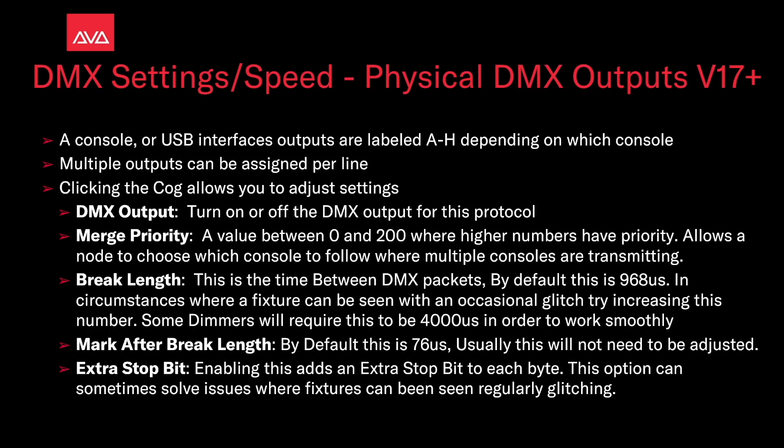Break length: this is the time between DMX packets. By default this is 968. In circumstances where a fixture can be seen with an occasional glitch, try increasing this number. Some fixtures require this to be 4000 in order to work smoothly. Mark after break: by default this is 76. Usually this will not need to be adjusted. Extra stop bit: this adds an extra stop bit to each byte. This option can sometimes solve issues where a fixture can be seen regularly glitching.